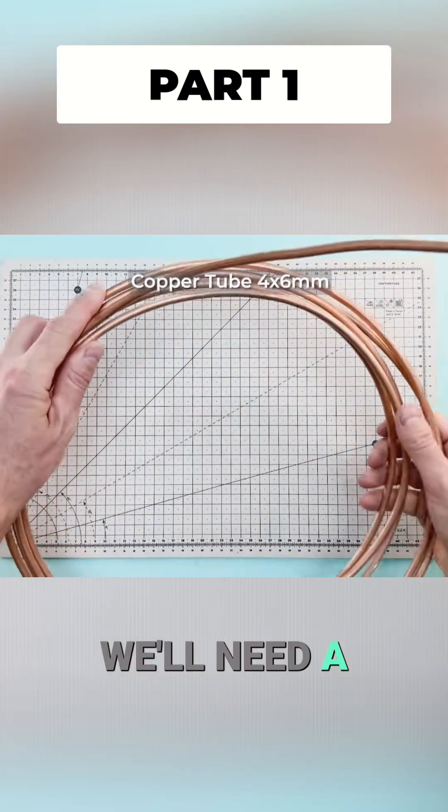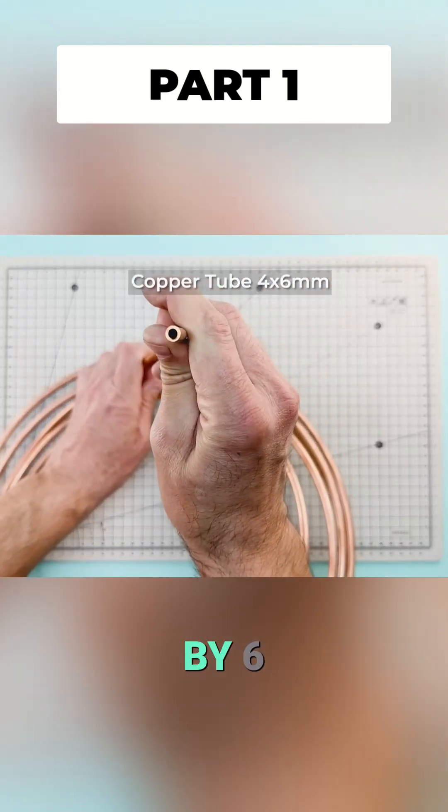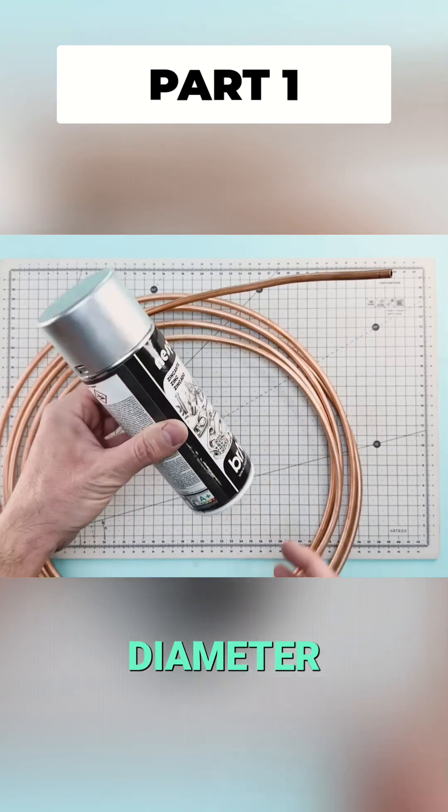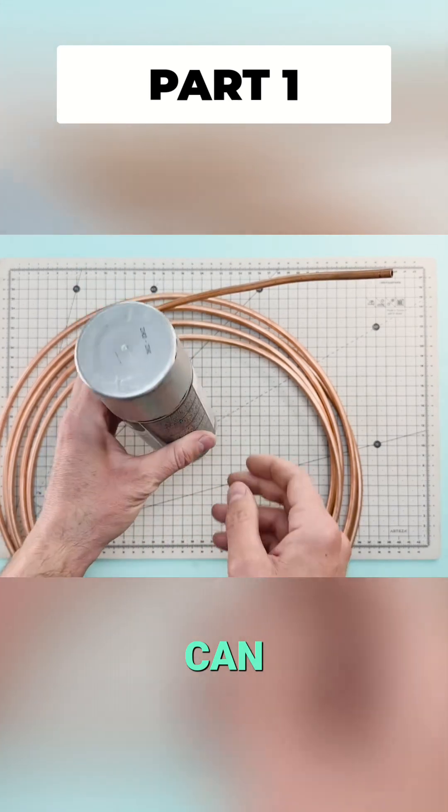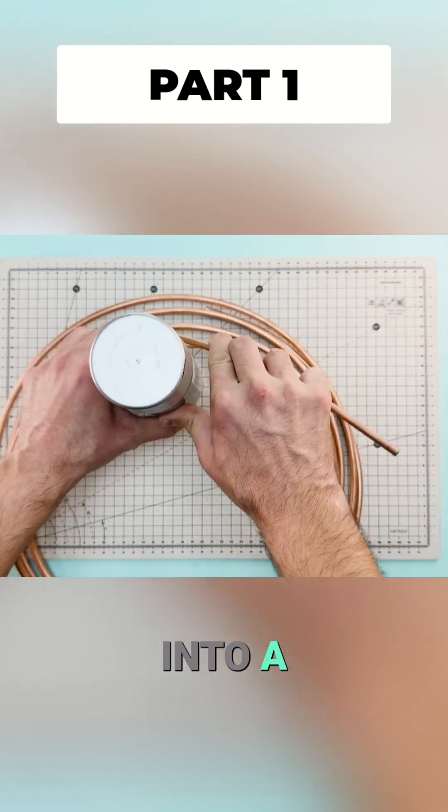To begin we'll need a copper tube with a four by six millimeter diameter. Using something round like this paint can will bend the copper into a spiral.